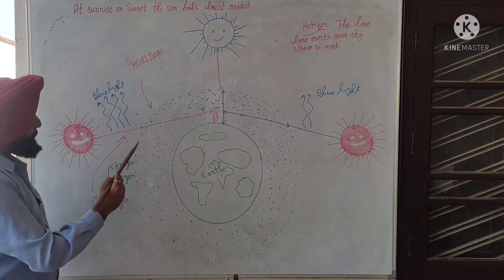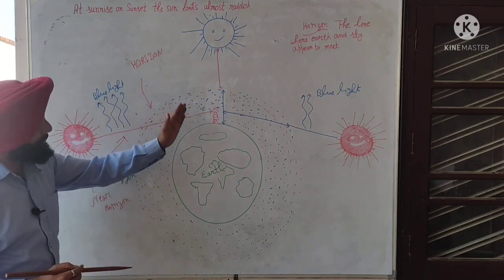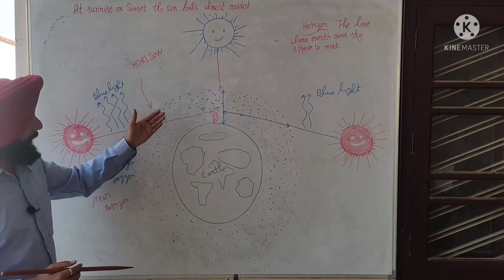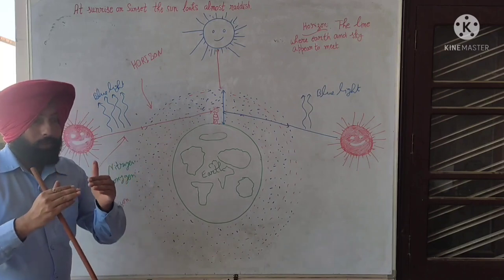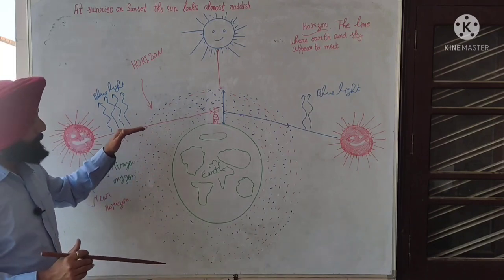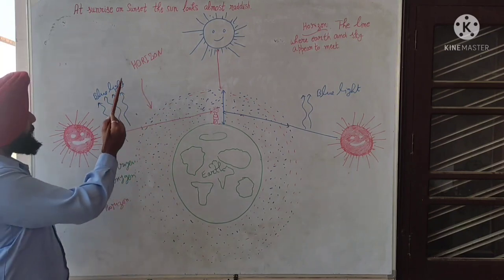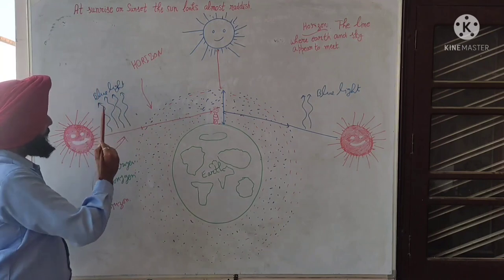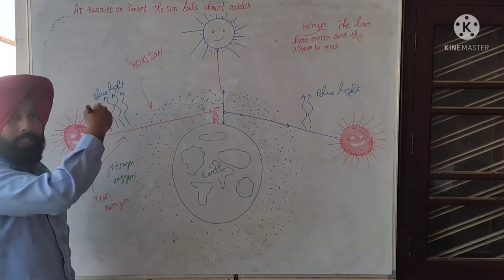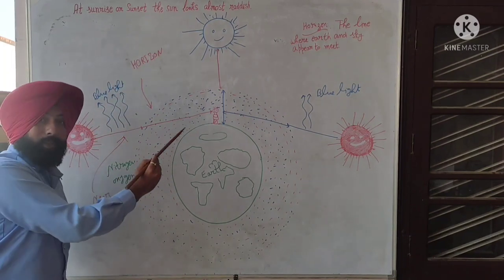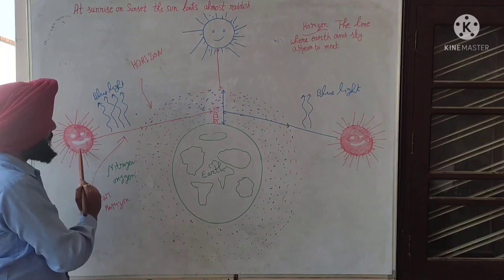So we know scattering of light is due to the gases present in the atmosphere. Light gets scattered based on wavelength. Which wavelength scatters more according to Rayleigh's law? In the previous video I have already told you why the sky is blue in color because light with shorter wavelength scatters more.